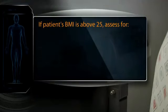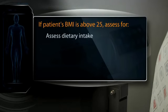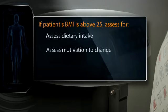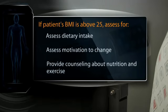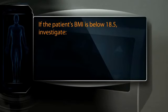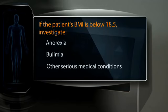If the BMI is above 25, assess the patient for additional risk factors: hypertension, high LDL cholesterol, low HDL cholesterol, high triglycerides, high blood glucose, family history of premature heart disease, physical inactivity, and cigarette smoking. Patients with a BMI over 25 and two or more of these risk factors should pursue weight loss, especially if the waist circumference is elevated, as seen in metabolic syndrome. Assess dietary intake by taking a diet history, assess the patient's motivation for lifestyle changes, and be prepared to provide counseling about nutrition and exercise. If the patient's BMI falls below 18.5, investigate possible anorexia, bulimia, or other serious medical conditions.